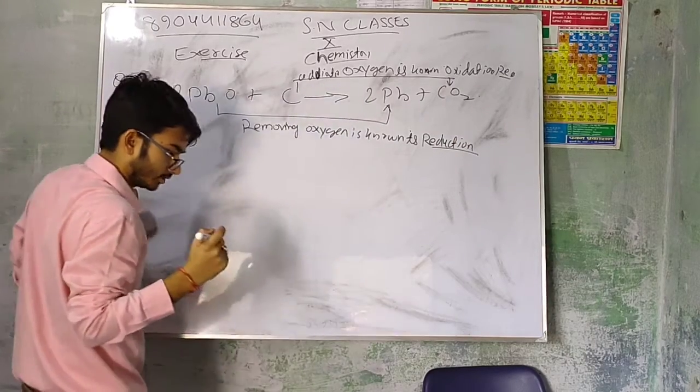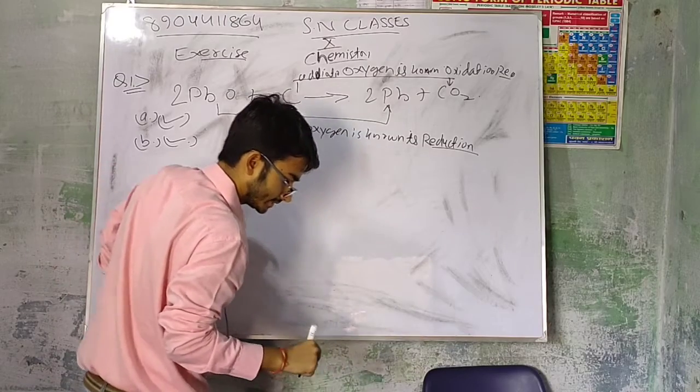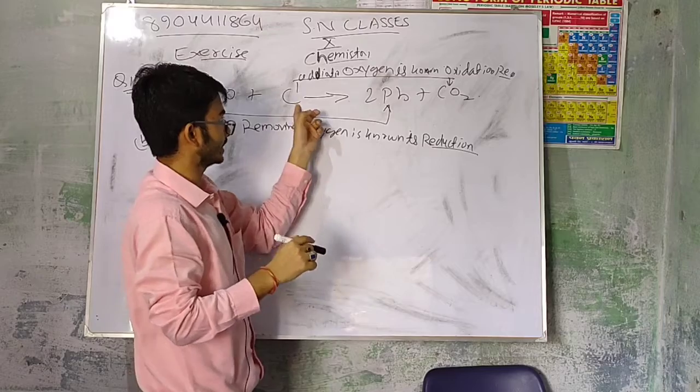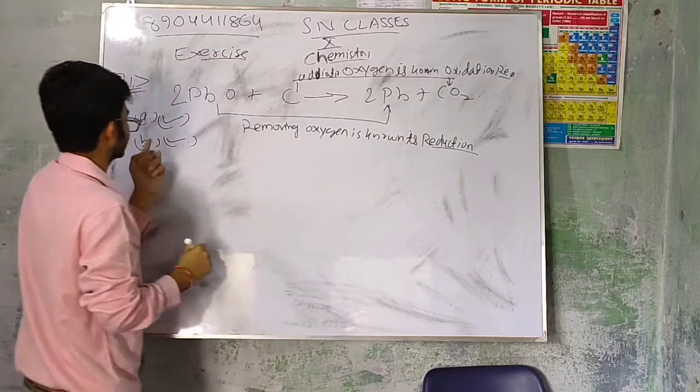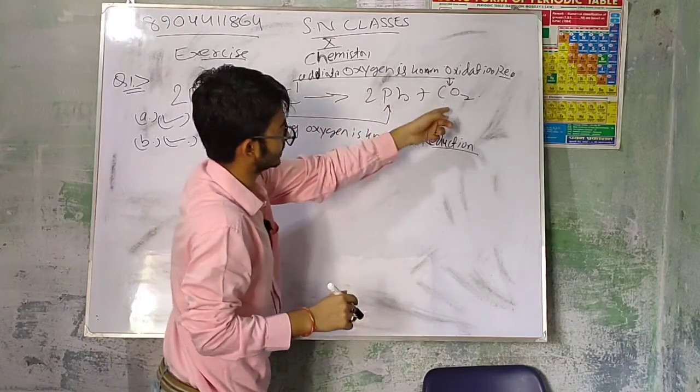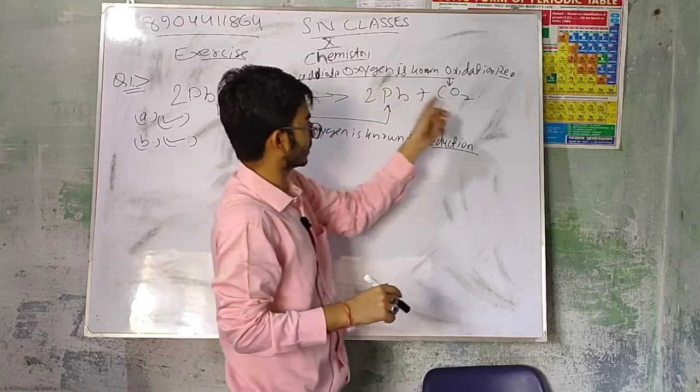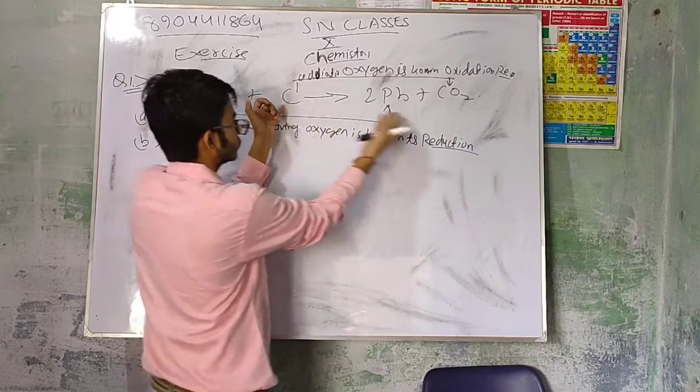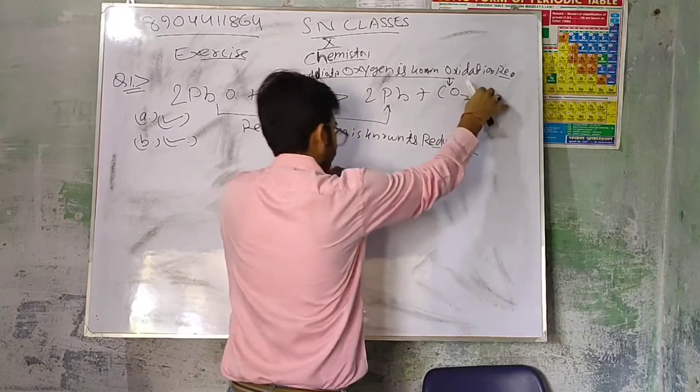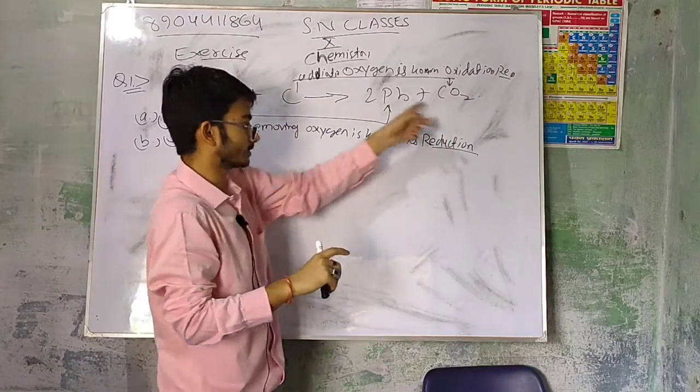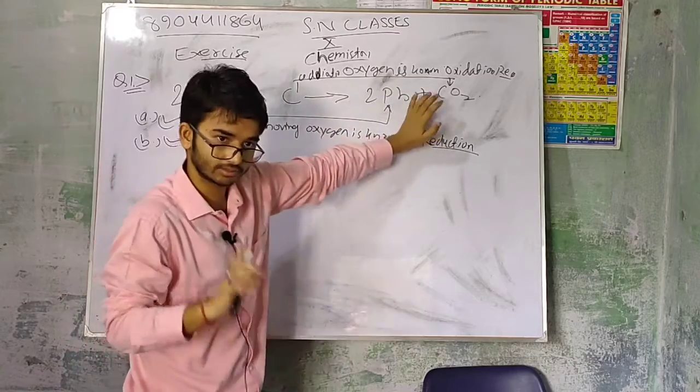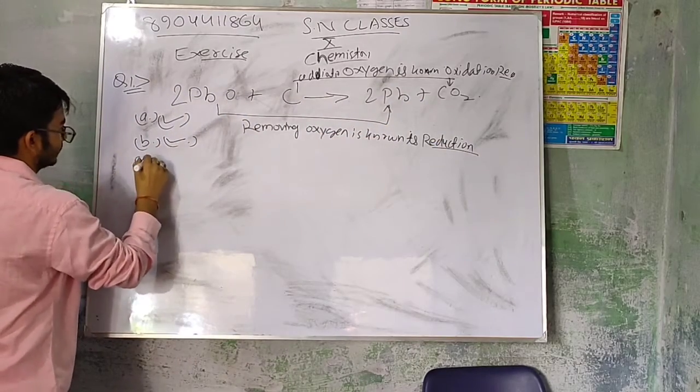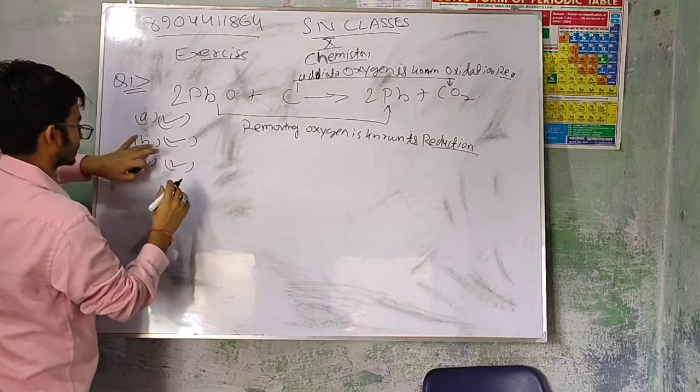The last option says carbon dioxide is getting oxidized. Statement B says carbon getting oxidized is true. But carbon dioxide getting oxidized is wrong - carbon is being oxidized, not carbon dioxide.